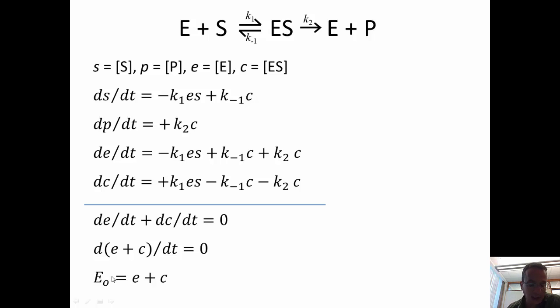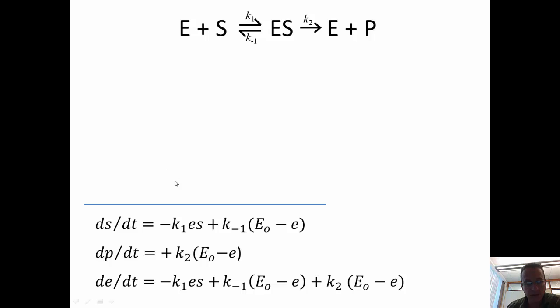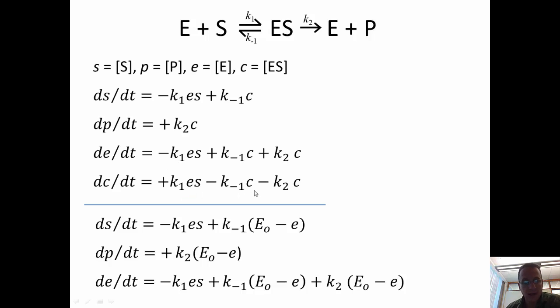So, actually, we can use that piece of information to turn these four equations, and that's useful to do, into three equations. So, the way I've done that is I've just substituted, every time I see a c, I've substituted E zero minus e.